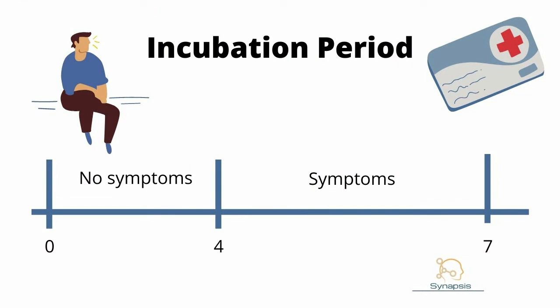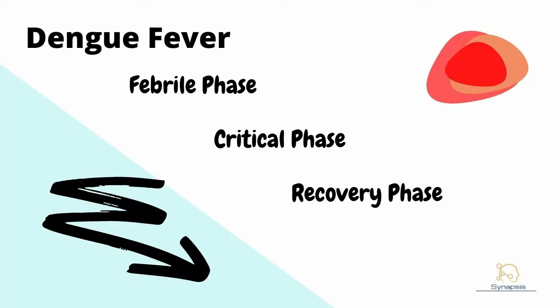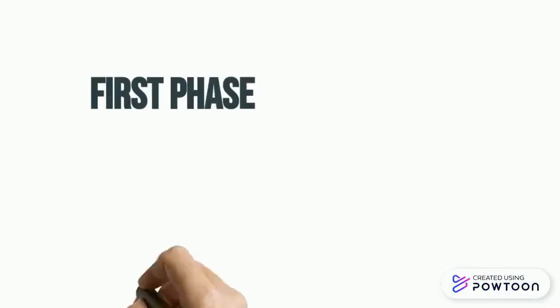Infectious diseases usually have their own pattern. Dengue fever has an incubation period of 4 to 7 days — the patient will look fine for approximately one week before symptoms start to show. After the incubation period, Dengue fever will undergo 3 phases. This is the most important thing that you should know about Dengue.